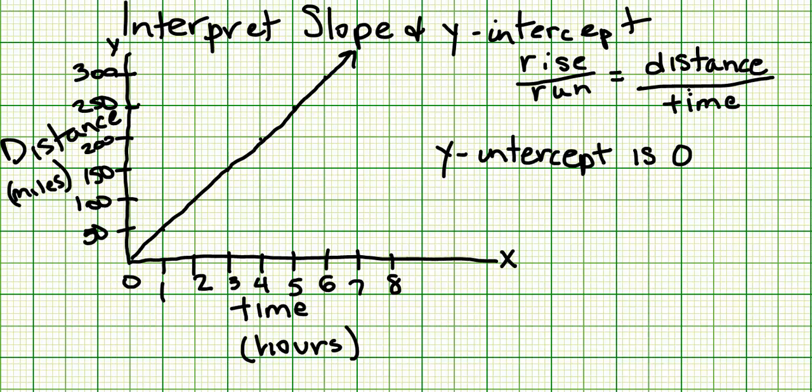If our y-intercept is zero - or the point (0,0) - this means that at the beginning of the situation, no time has passed and the distance traveled is zero miles. So to interpret the y-intercept, we would say: at zero hours, the distance is zero miles.